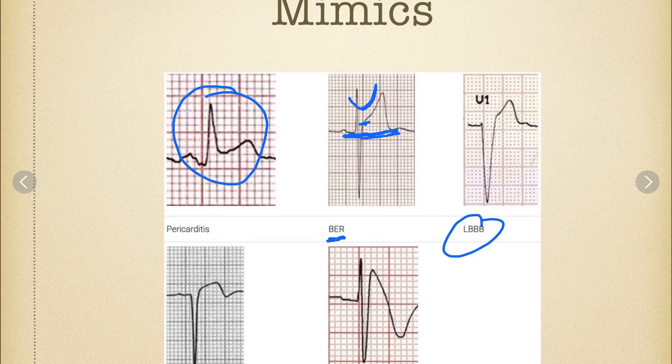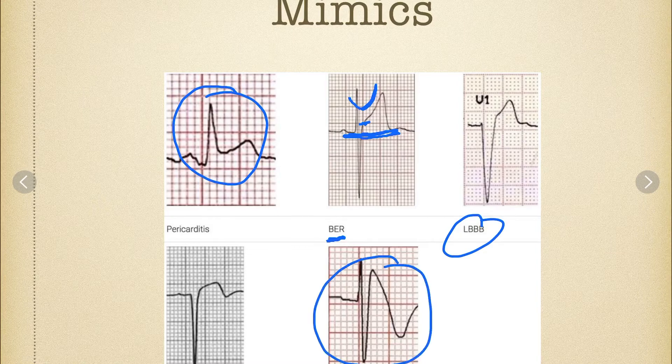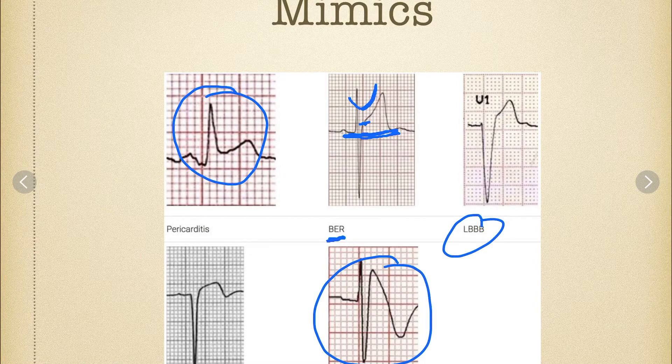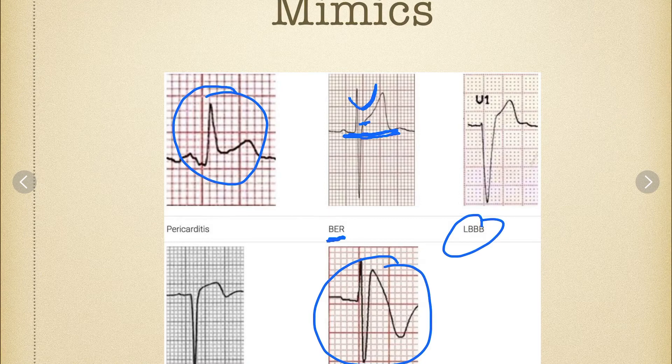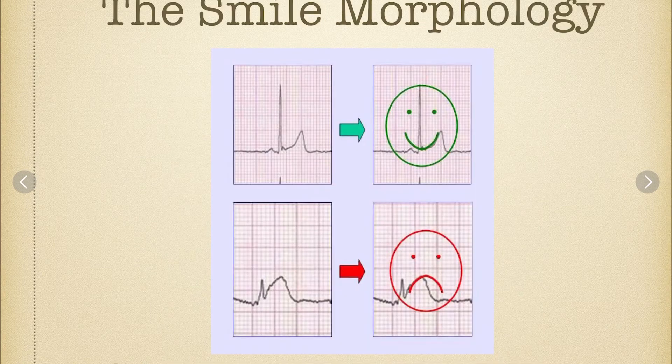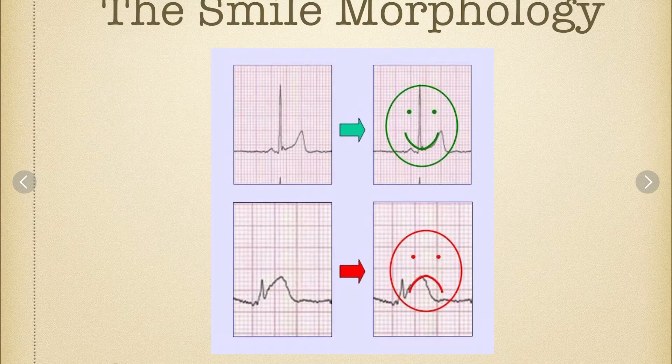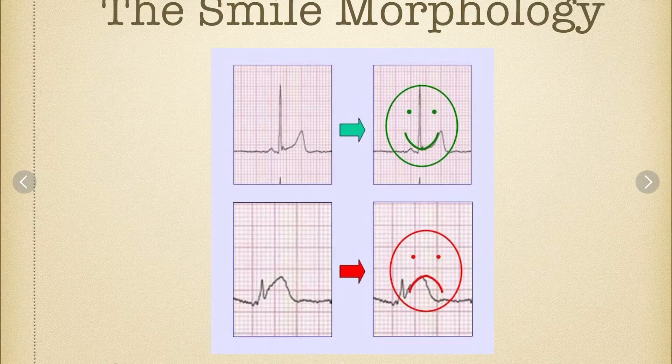We already know about left bundle branch blocks. And then this Brugada down here in the bottom, is another one that if I had a young patient that had a syncopal episode, usually think like middle school, high school, and I did a 12 lead on them, which we should be doing 12 leads on all of our kids that pass out. And I saw that I would say we need to go to the hospital. So this smile morphology is what they're getting at.